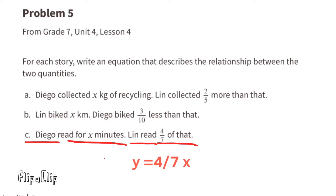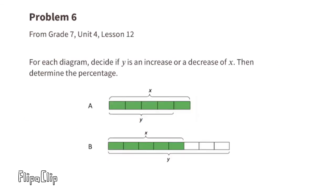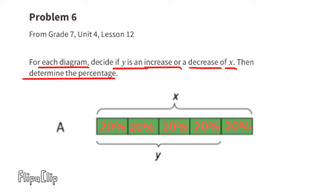Problem number six, from seventh grade unit four lesson 12 — for each diagram, decide if y is an increase or decrease of x, then determine the percentage. Part A: x is split into five equal pieces, so each piece is 20 percent. y covers only four of those pieces, so y is 80 percent of x. That is a decrease of x by 20 percent.